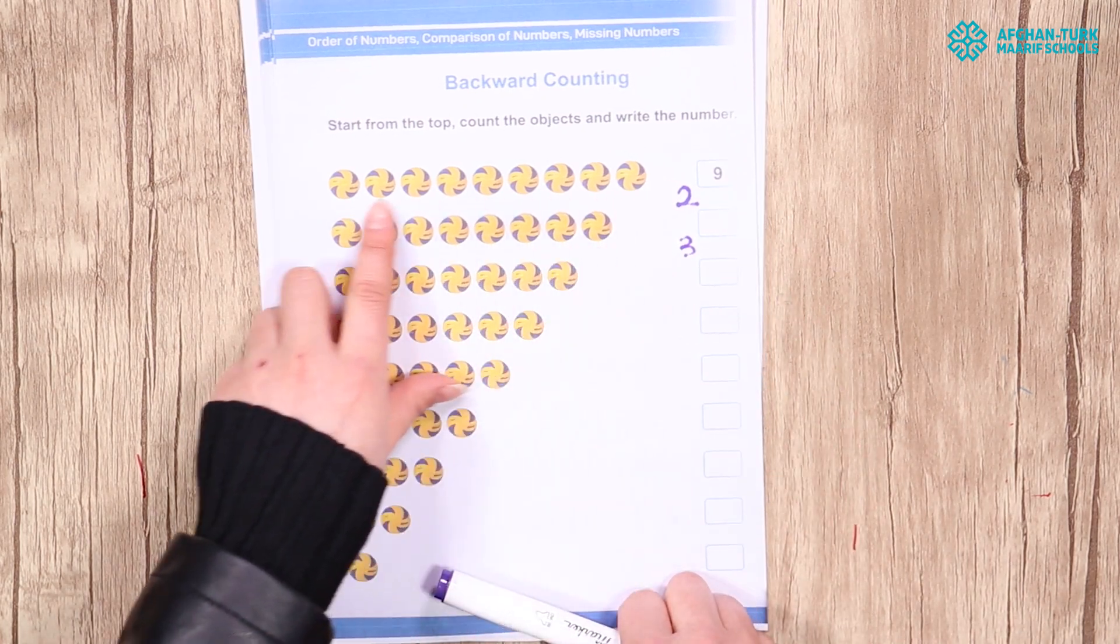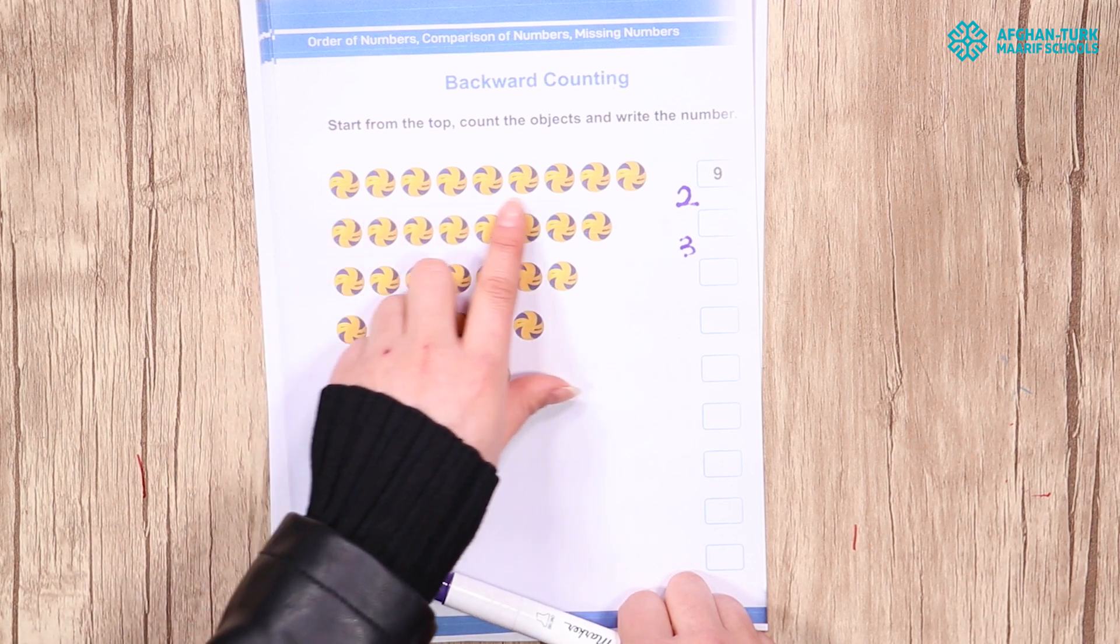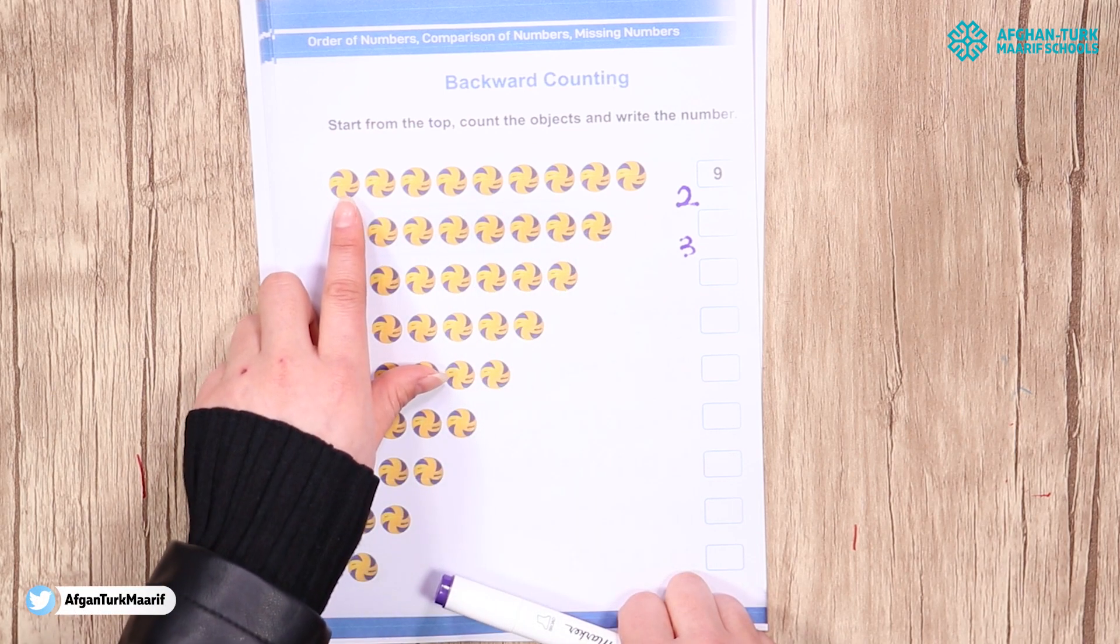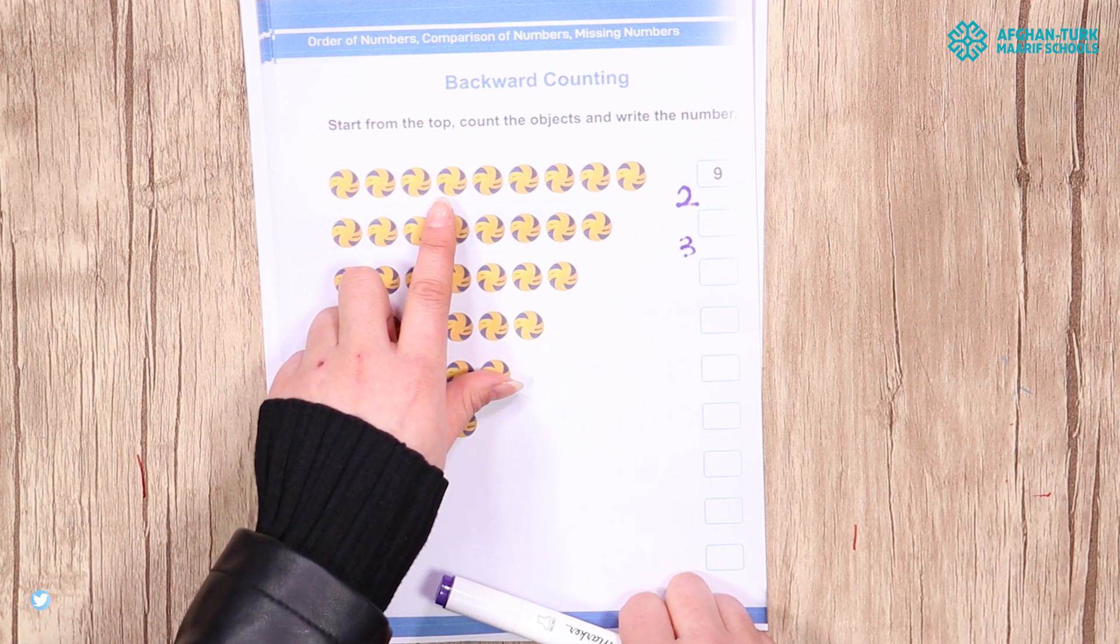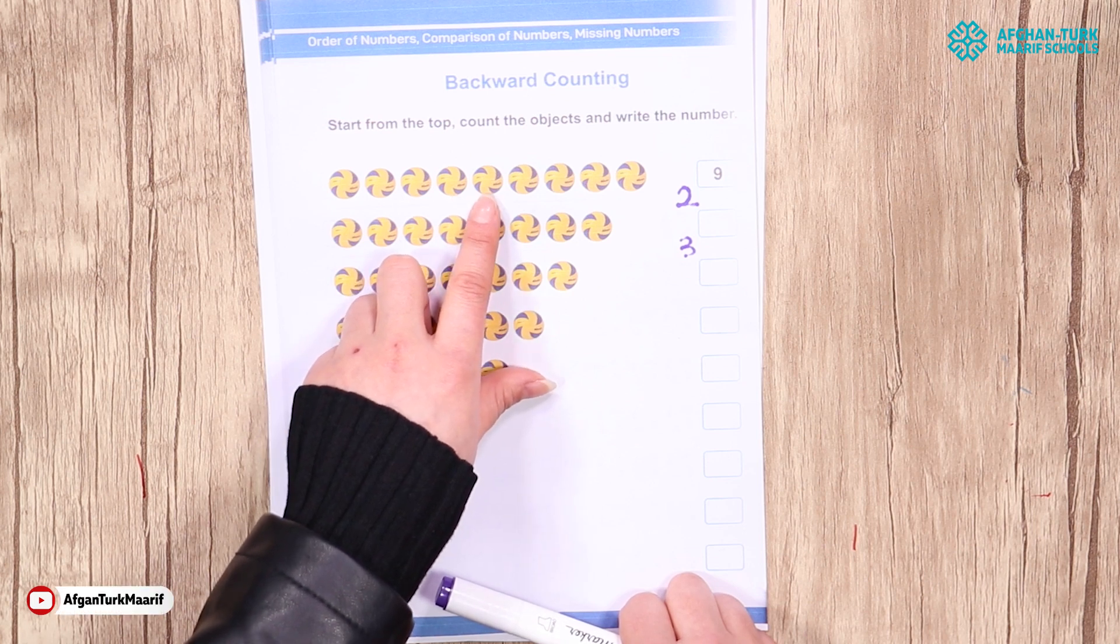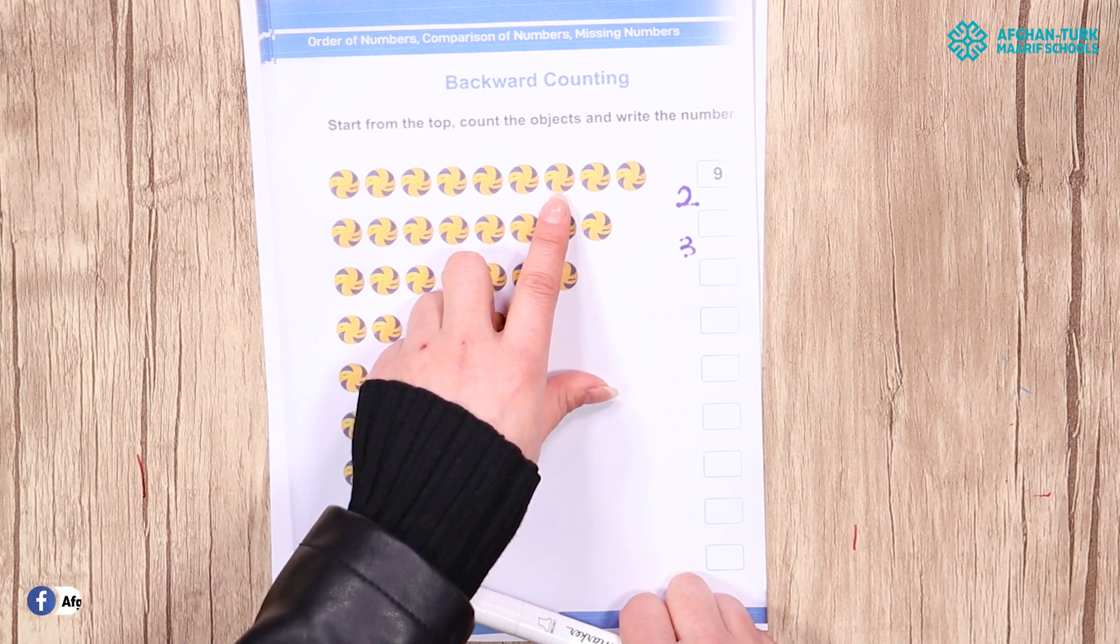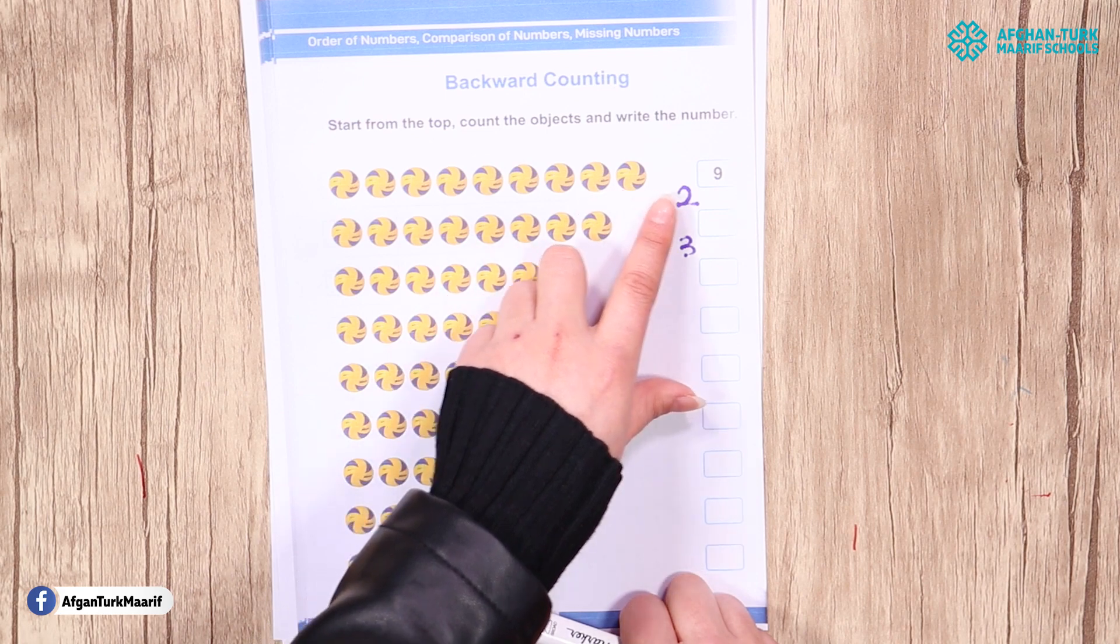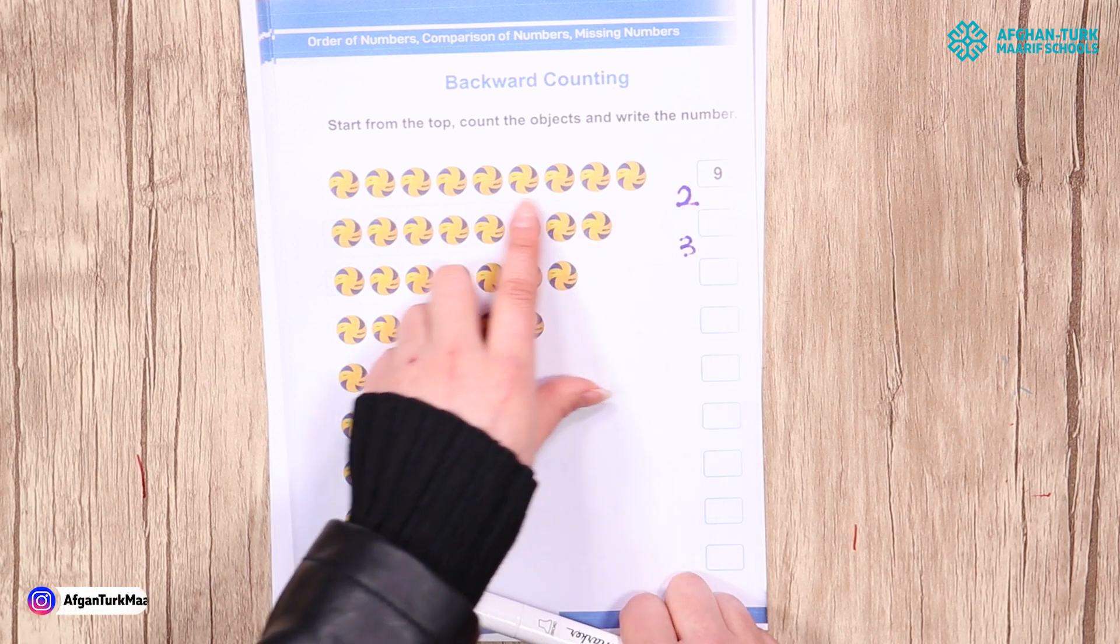How many balls do we have here? 1, 2, 3, 4, 5, 6, 7, 8, 9. Yes, we have 9 balls here.